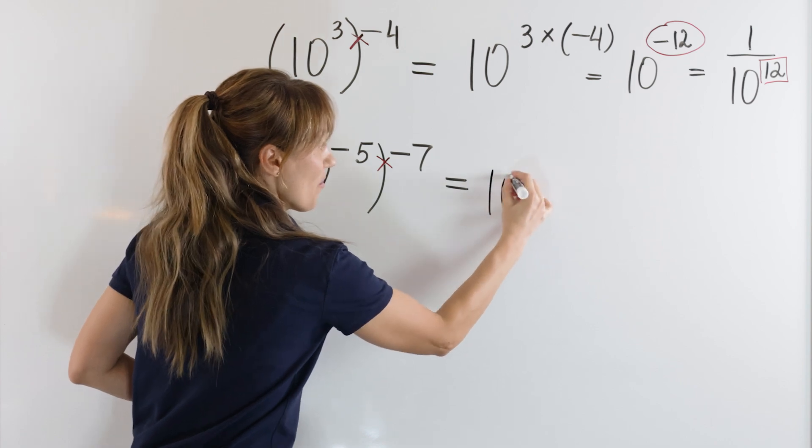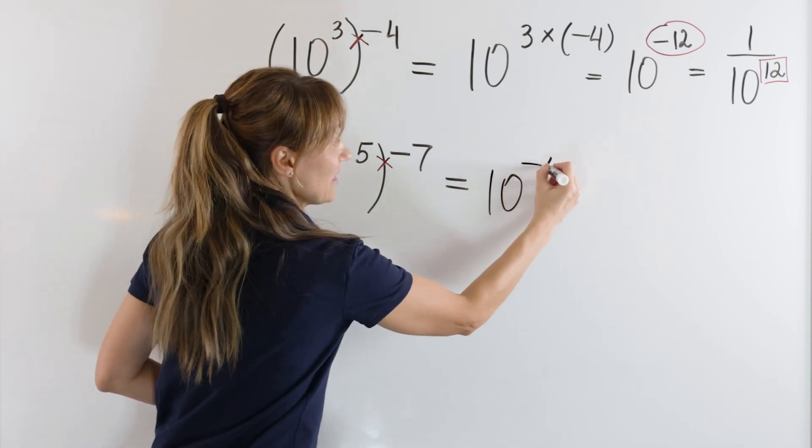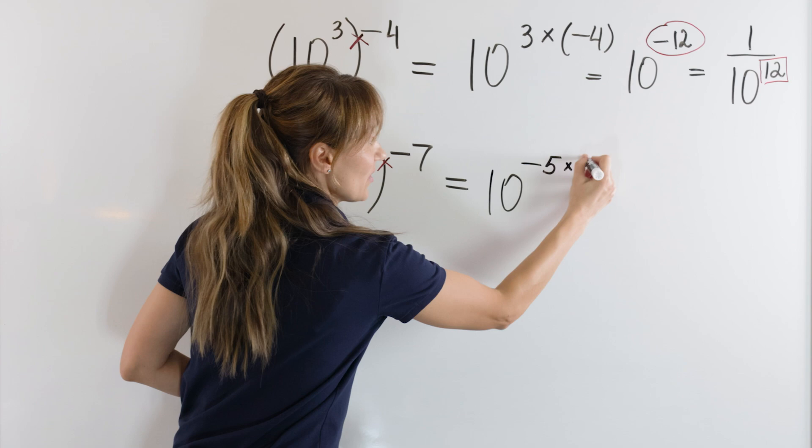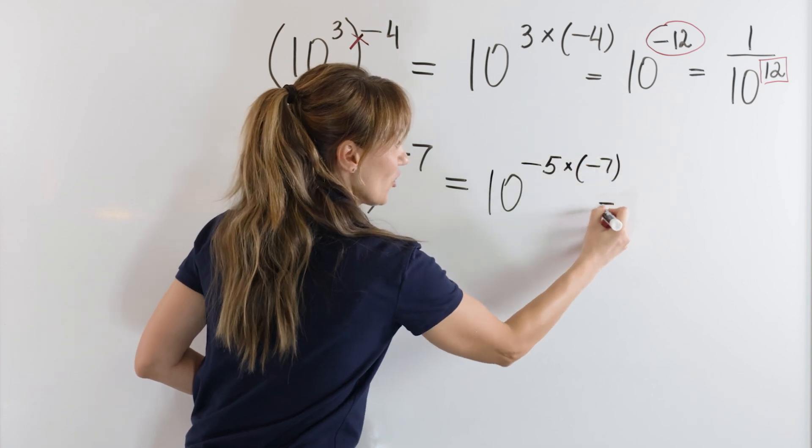Keep the same base 10, multiply the exponents. Negative 5 times negative 7. What do we get?